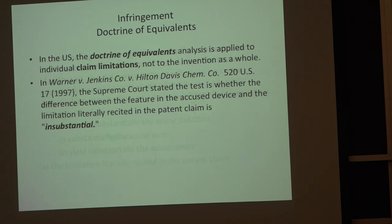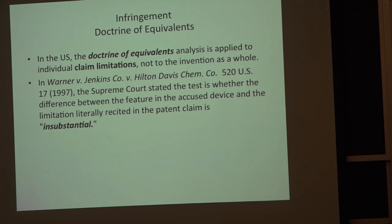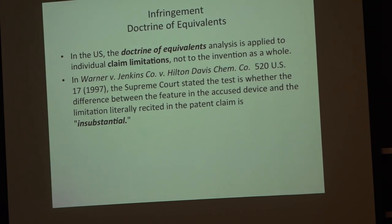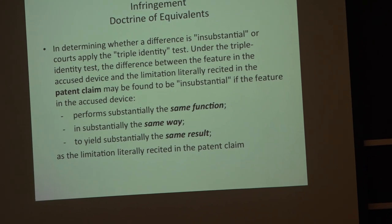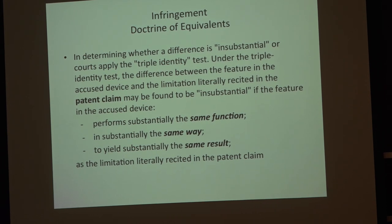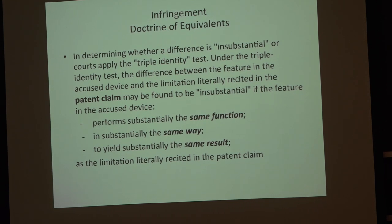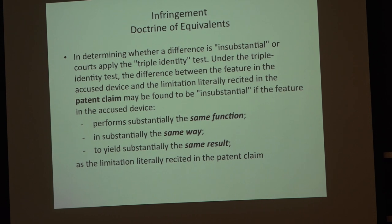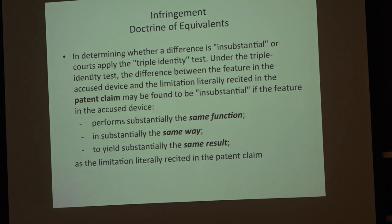There was a famous case called Warner versus Jenkins where the Supreme Court talked about the doctrine of equivalence when it comes to claims. The test is whether the difference between the feature in the accused device and the limitation literally cited in the patent claim is insubstantial. Where differences are insubstantial, the doctrine of equivalence probably obtains. To test whether it's insubstantial, you look at the feature and ask three questions: Does it perform substantially the same function? Does it perform that function in substantially the same way? And does it yield substantially the same result? If the answer to any of those is no, you probably don't have an infringement.